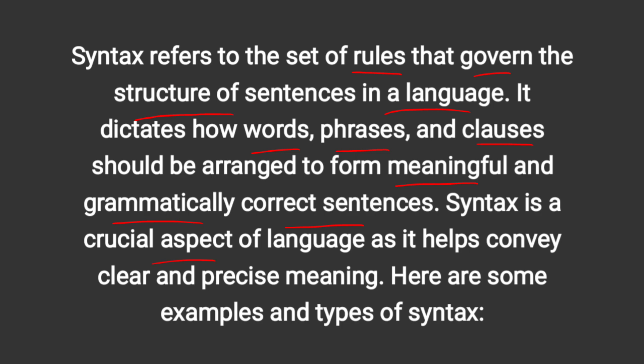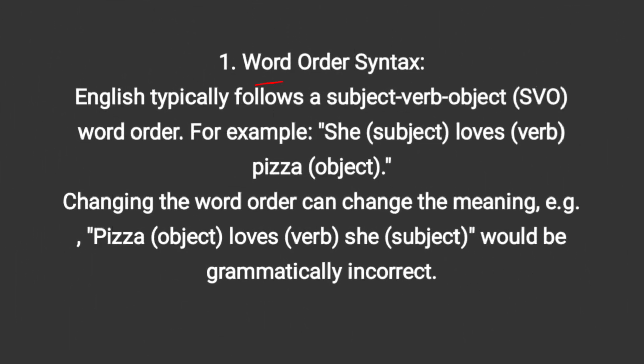Syntax is a crucial aspect of a language as it helps convey clear and precise meaning. Here are the types of syntax. The first type is word order syntax. English typically follows a subject-verb-object (SVO) word order. For example, 'She loves pizza' — here 'she' is the subject, 'loves' is the verb, and 'pizza' is the object.